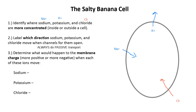I had a name for the normal charge on a neuron's membrane — the normal charge on any cell's membrane. The name of the normal charge on the membrane of a cell is called the resting membrane potential, abbreviated RMP.